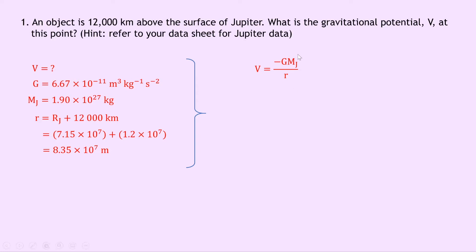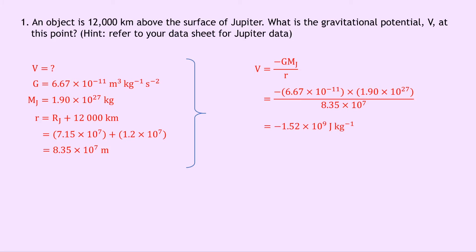We're just using MJ to mean Jupiter here. Substituting in our numbers, we get minus 6.67 times 10 to the minus 11 times 1.90 times 10 to the 27 divided by 8.35 times 10 to the 7. Putting that into your calculator should give you an answer of minus 1.52 times 10 to the 9 joules per kilogram.